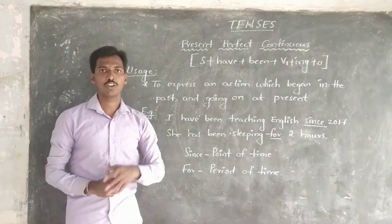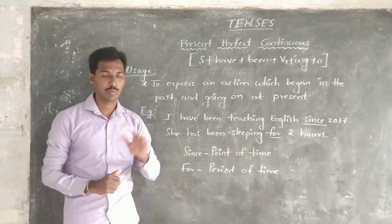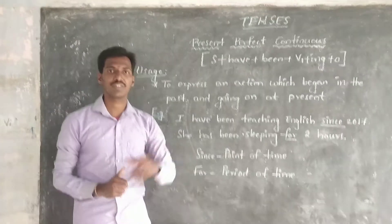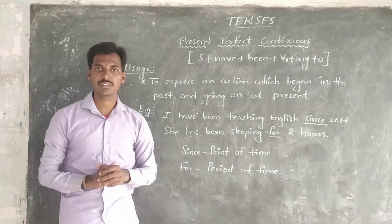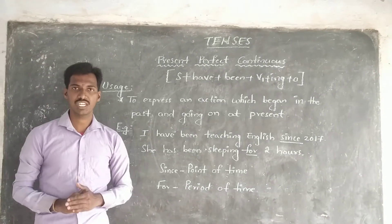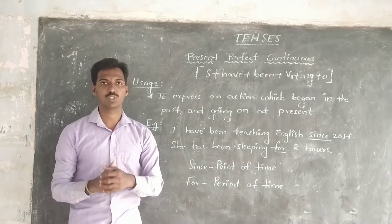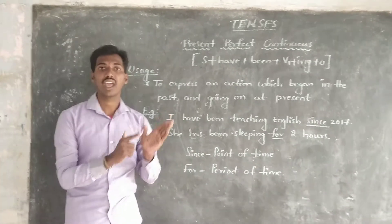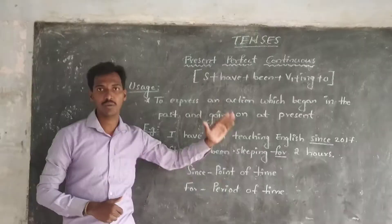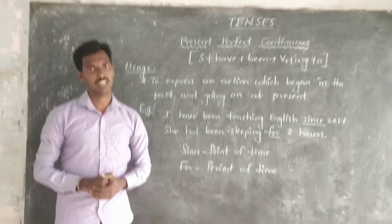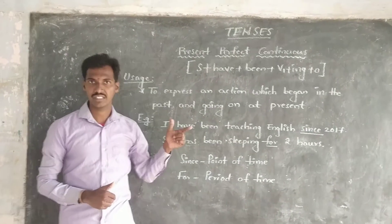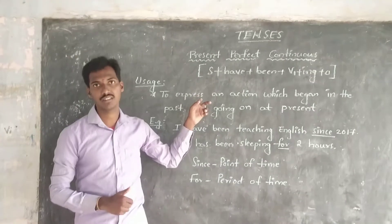I have provided you 4 principles related to Present Tense. The first one, Simple Present: Subject + V1 + object. Present Continuous: Subject + be form + V1+ing + object. Present Perfect: Subject + have form + V3 (past participle) + object. And Present Perfect Continuous: Subject + have form + been + V1+ing + object. You can make sentences easily by using these principles.